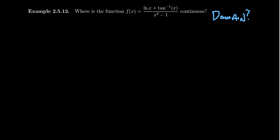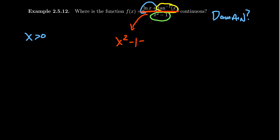So what's the domain? For the natural log, we need x greater than zero — that's its domain. For arctangent, the domain is all real numbers, so there's no concern there. For x squared minus 1 as a polynomial, the domain is also all real numbers. The concern is the division: we must investigate x squared minus 1 equals zero. If x squared equals 1, taking the square root gives x equals plus or minus 1. These are values we should avoid.